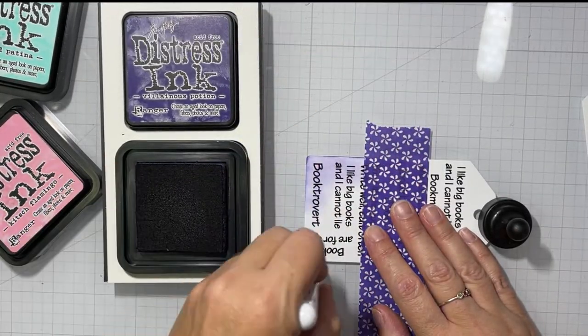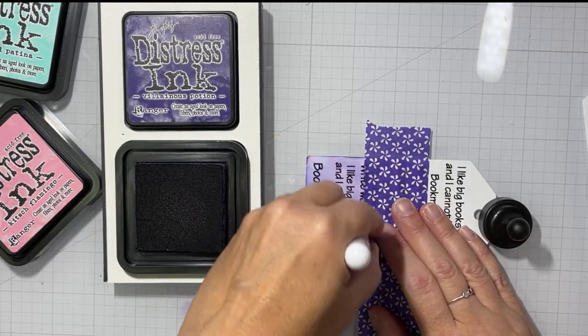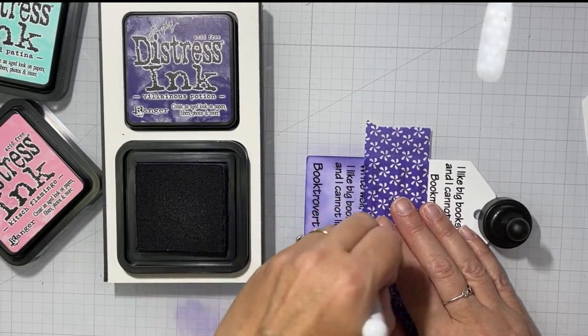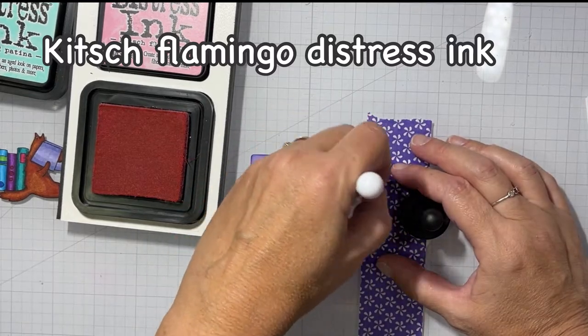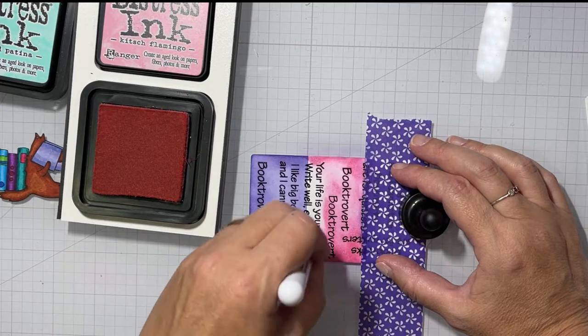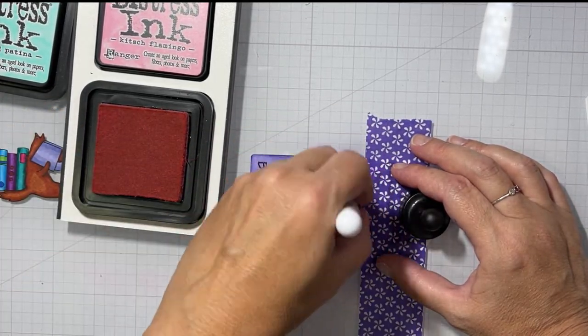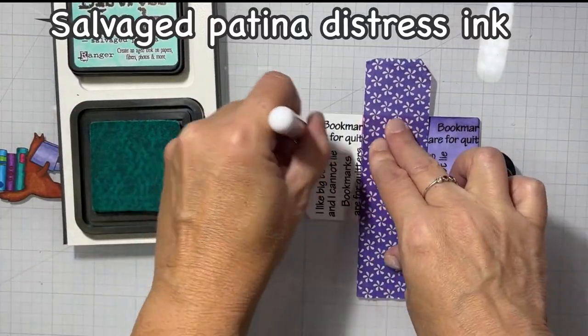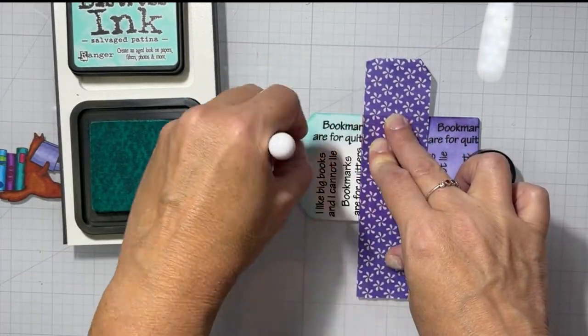And then we're going to do some ink blending. My mind's ahead of my mouth, it seems. I'm doing two voiceovers in a row here. So I went with Fill in this Potion, Kitsch Flamingo, and Salvaged Patina. And it's just Distress Ink, not Oxide. And I did not blend them together. I put clear lines in between each color with my purple tape. And that's the way I wanted it.